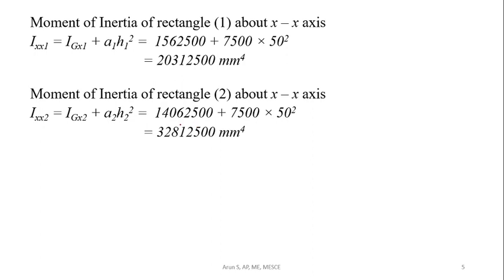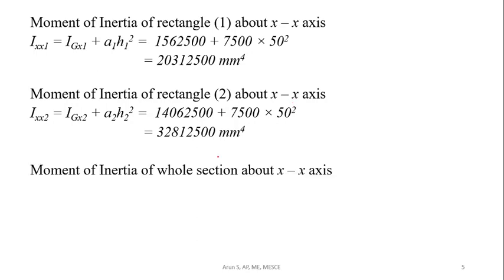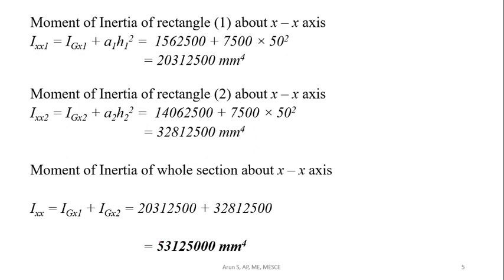The moment of inertia of rectangles 1 and 2 about the X-axis through the centroid have been determined. Now we can get the moment of inertia of the whole section: I_xx = I_gx1 + I_gx2. We will get the moment of inertia to be 53,12,520 mm⁴ about the X-axis.